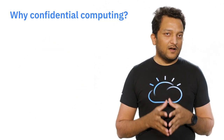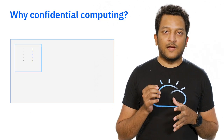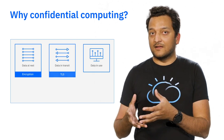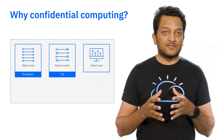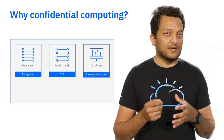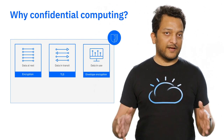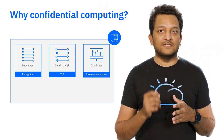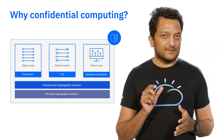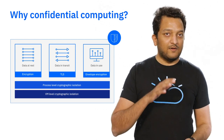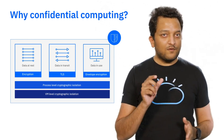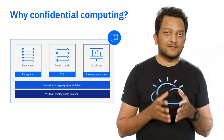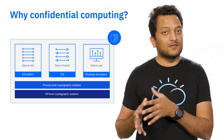At a high level, confidential computing protects data through encryption and isolation of memory, which complements your data in transit encryption using TLS, and at-rest encryption, which is envelope encryption using a root key, for true end-to-end protection. This cryptographic isolation of memory happens either at a VM level or at a process level. Today, let's focus on process-level cryptographic solutions, or secure enclaves.